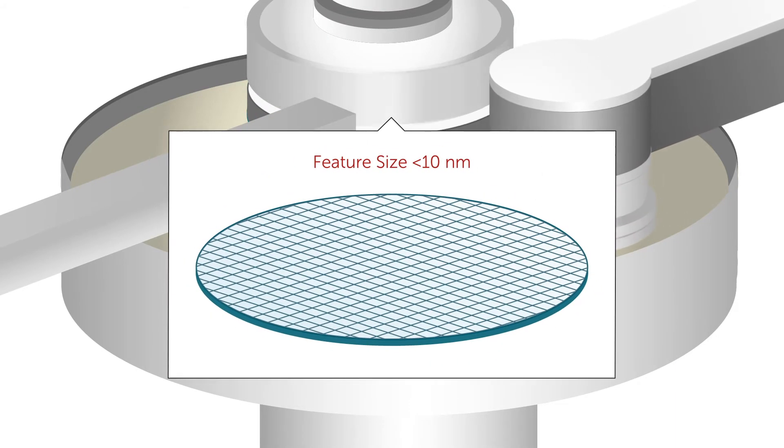As features get smaller and more complex, chemical mechanical planarization is becoming increasingly important to semiconductor yield.